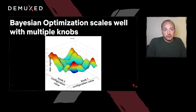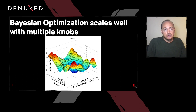Bayesian optimization scales really well with multiple dimensions and multiple knobs. In this graph, for example, we are using two knobs to model our rebuffer rate, and Bayesian optimization will model a surface.